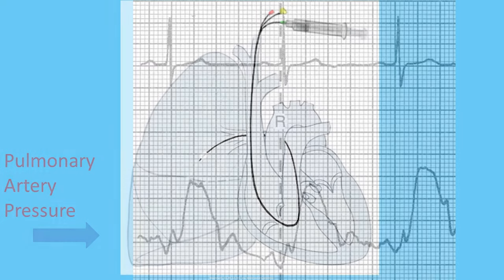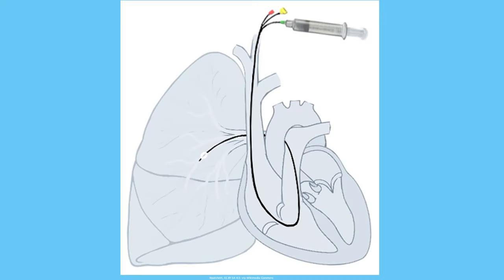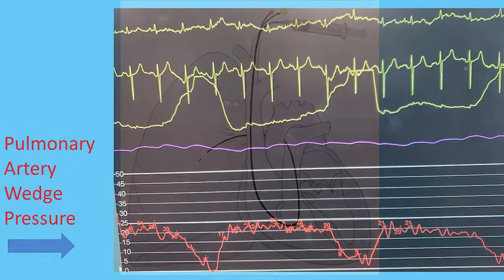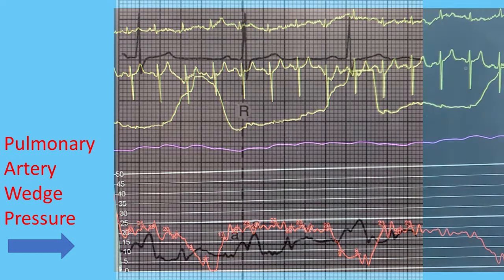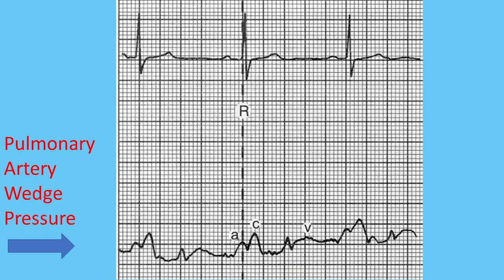I then inflate the balloon at the tip of the Swan-Ganz catheter and push it further into the pulmonary artery branches to wedge it and to get the pulmonary artery wedge pressure. This is the pulmonary artery wedge pressure that I see on the monitor in front of me, and here is a schematic representation of how it should look.